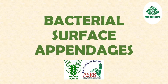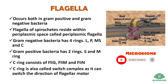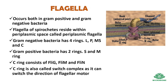First, flagella. Flagella occur in both gram-positive and gram-negative bacteria. Flagella of spirochetes reside within the periplasmic space, called periplasmic flagella. Gram-negative bacteria have 4 rings: L, P, MS, and C. Gram-positive bacteria have 2 rings: S and M ring. The C ring consists of Flg, Fli M and N, and is also called the switch complex as it can switch the direction of the flagella motor.